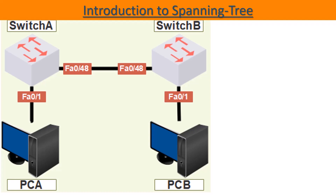In a network, redundancy is very important so as not to have a single point of failure. The downside of redundancy in a switched network is that it introduces network loops. This is why the spanning tree protocol was designed — in order to solve this loop problem. Network loops are introduced only when you want to have redundancy.